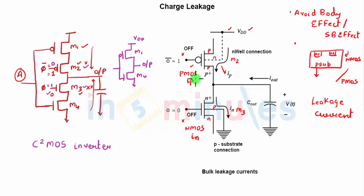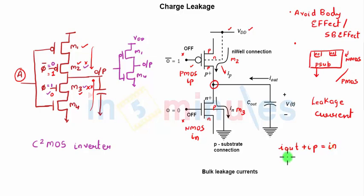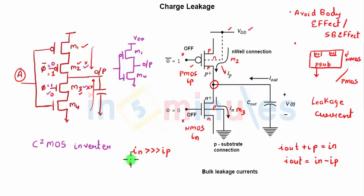Assuming there is a capacitor at the output, if we apply Kirchhoff's current law, we find: current entering equals I_out plus I_P equals I_N, so I_out equals I_N minus I_P. If we assume I_N is greater than I_P, then I_out is a positive value. Let's call this new positive value I_L.